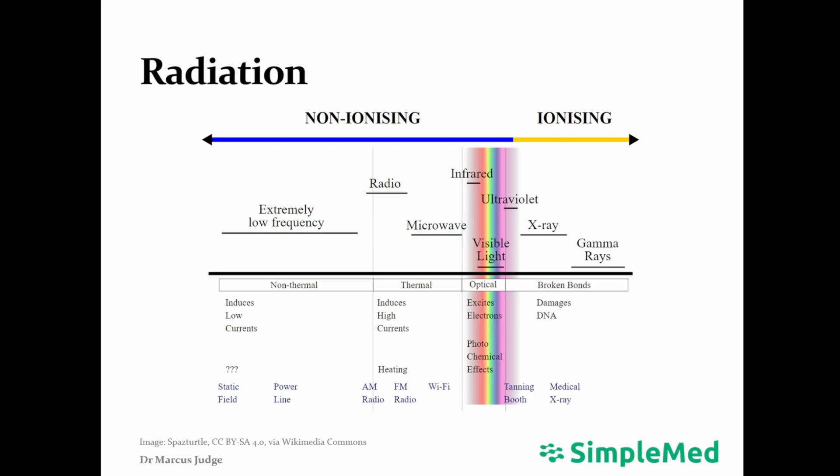This diagram shows the electromagnetic spectrum, including what wavelengths of light are ionizing and non-ionizing. You will notice that ultraviolet is in the ionizing section, and this is why we put sun cream on to protect us from the sun and avoid skin cancer.